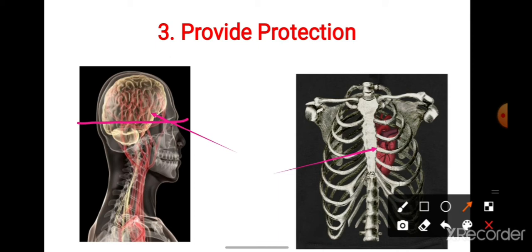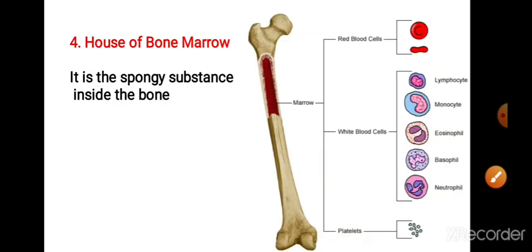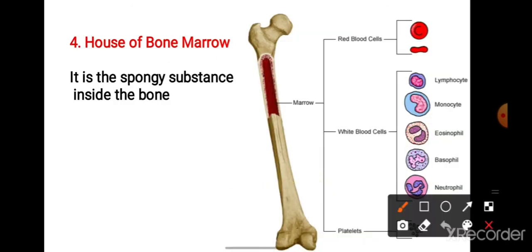The fourth function is it is house of bone marrow. Bone marrow is a spongy substance inside the bone, in the center of bone. It manufactures blood cells for the body.